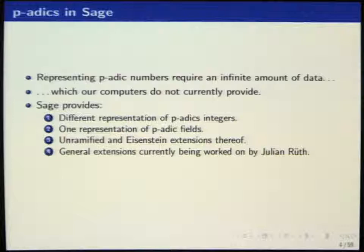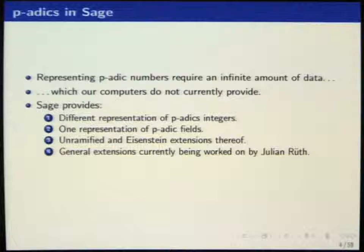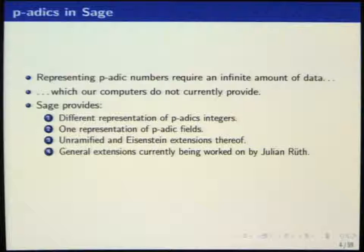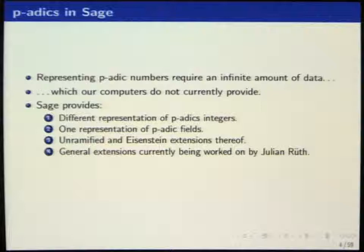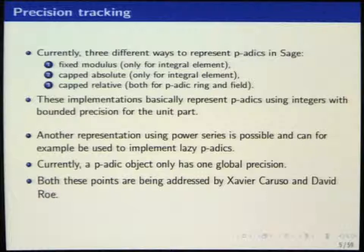So what do we have in SAGE now? To represent a p-adic number, you need a limited amount of memory, and you have to represent them with approximations. You have to decide some way to deal with precision, how you truncate them, and so on. In SAGE, you can currently use p-adic integers and numbers, and p-adic fields. You can also define unramified and Eisenstein extensions.